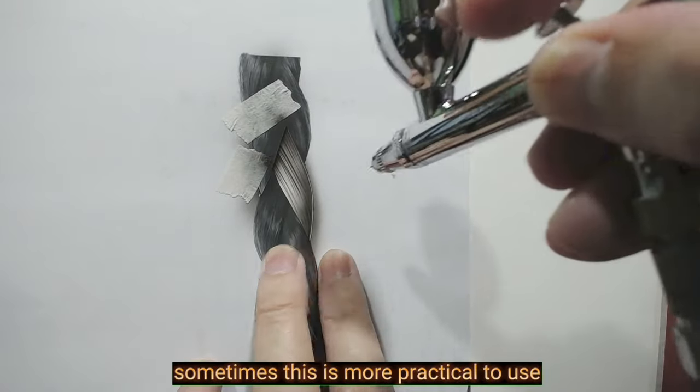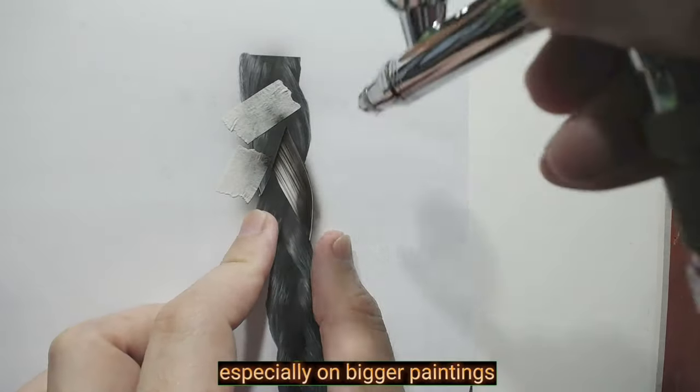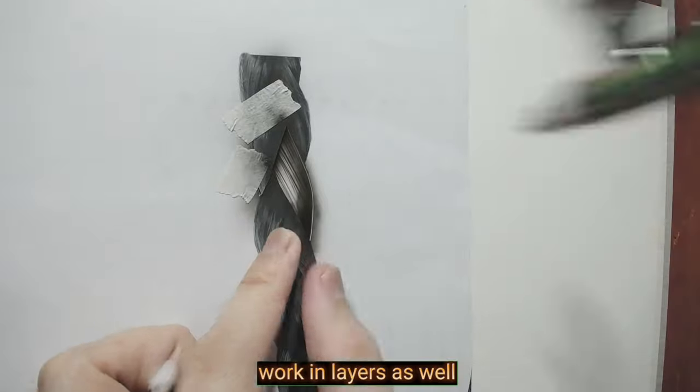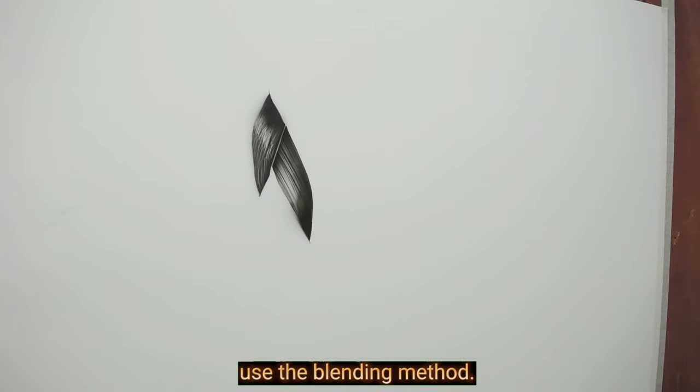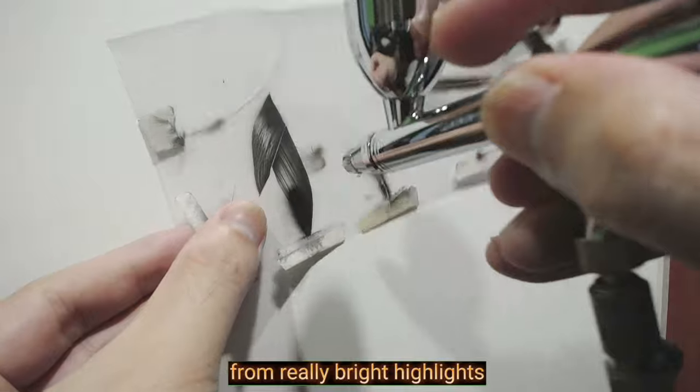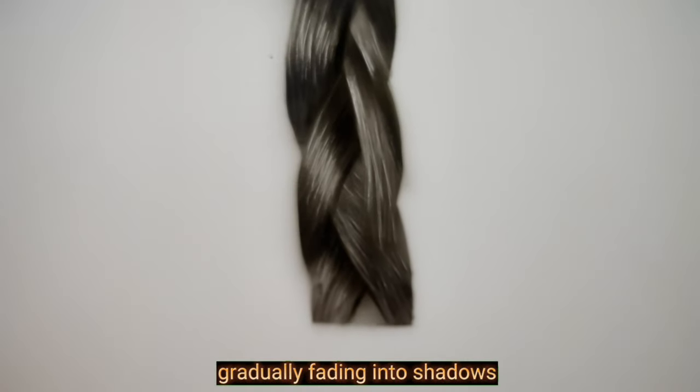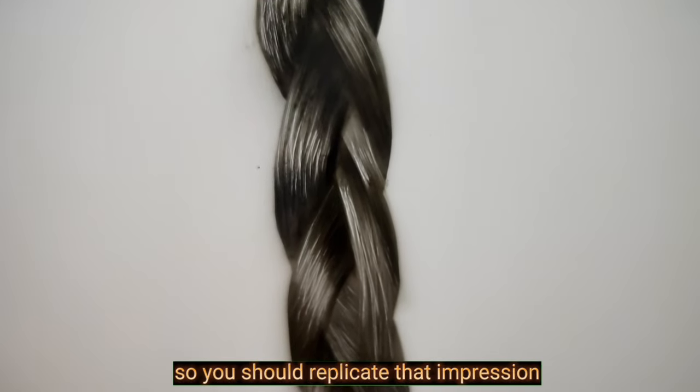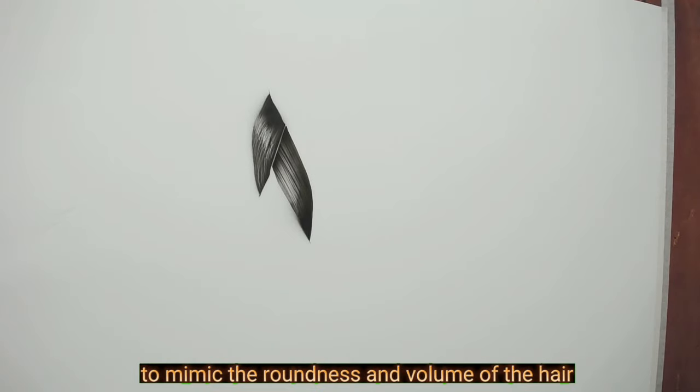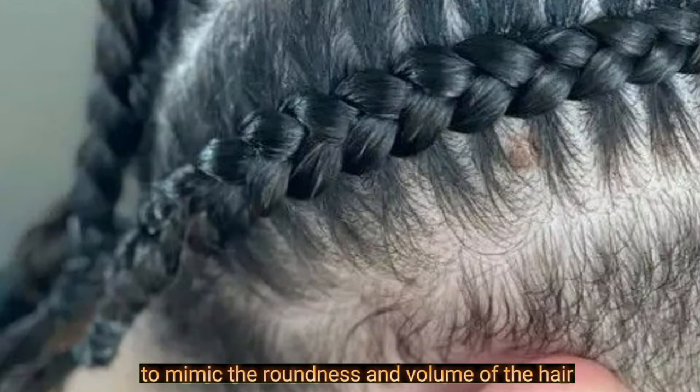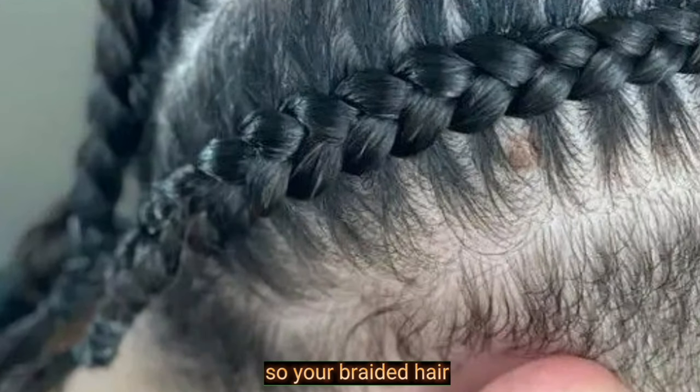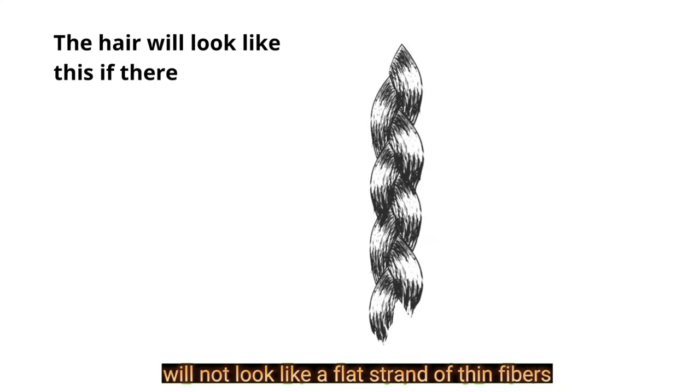Sometimes this is more practical to use, especially on bigger paintings like this. Work in layers as well. Use the blending method. From really bright highlights, gradually fading into shadows. So you should replicate that impression to mimic the roundness and volume of the hair. So your braided hair will not look like a flat strand of thin fibers.